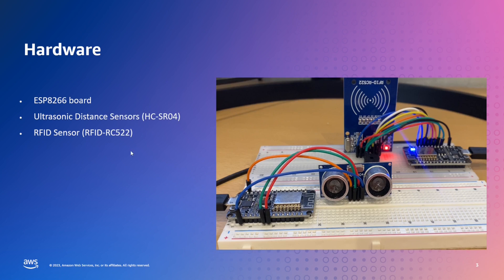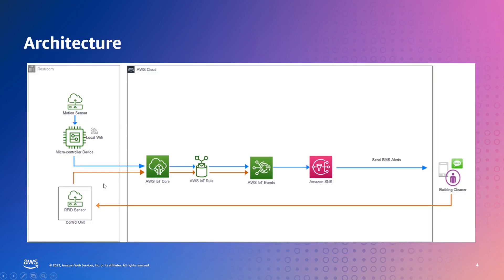Now let's see how I built this using AWS services. This is the high-level architecture. On the left-hand side, it has the ultrasonic distance sensor which is connected to the microcontroller device and it sends the data over MQTT into AWS IoT Core. The AWS IoT Core has an IoT rules engine which forwards the messages to AWS IoT Events. Within AWS IoT Events, I've created a detector model which maintains a counter for the usage of the restroom, and every time it receives a message from the restroom sensor, it increments the value of the counter. The detector model also has a defined limit after which the status of the restroom will be set to unclean and an alert will be sent out to the cleaning staff using Amazon Simple Notification Service.